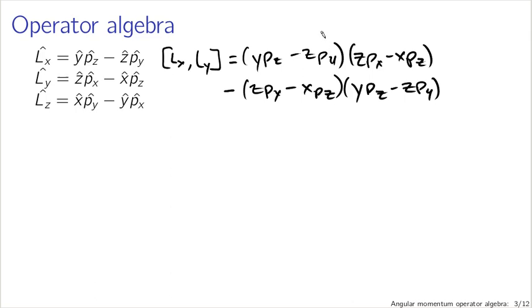If I expand out each of these terms, for instance from the product of Y PZ and Z PX I get a Y, Z, PZ, and PX. All these coordinates are in different directions except for PZ and Z. Back when we discussed quantum mechanics in three dimensions, we noted that the commutator of PZ and Z is the same as X and PX in one dimension, while Y and PZ commute, as do Y and PX, Z and PY, etc. If the momentum and position operators are not the same coordinate, they commute.